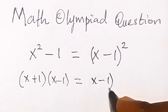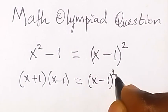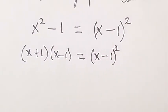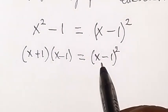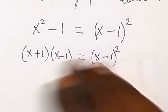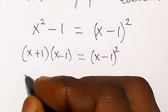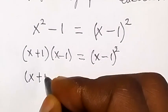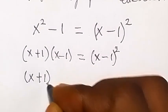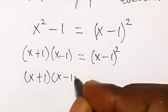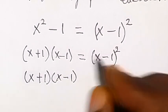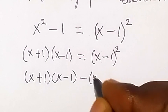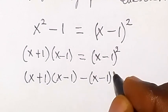That equals what we have on the right-hand side, which is x minus one squared. So let's bring the right-hand side over, and this becomes: x plus one times x minus one, minus x minus one, all squared.